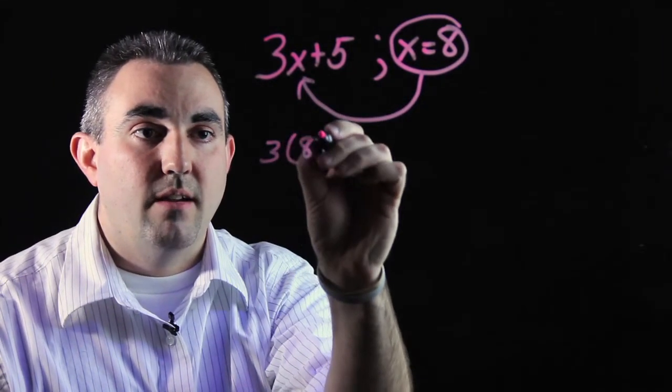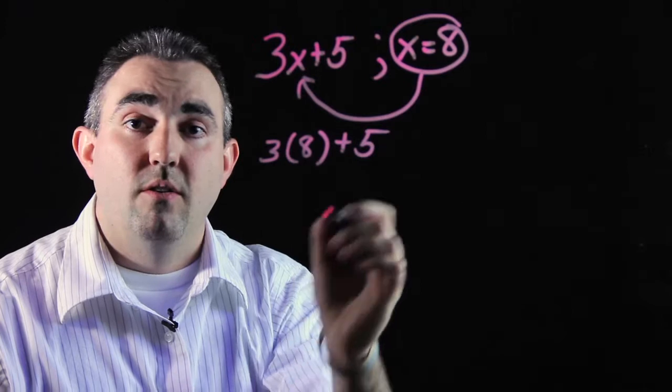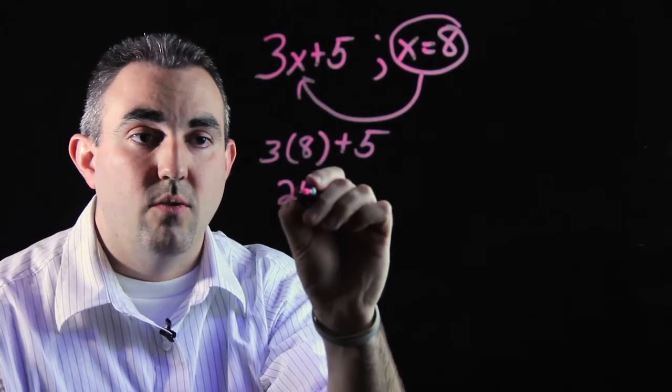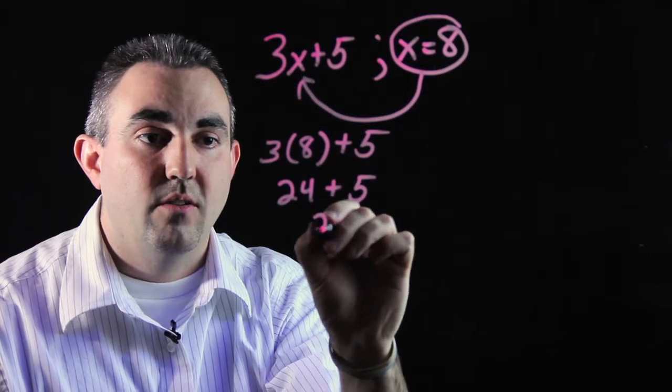Therefore, 3 times 8 plus 5 is how you would solve the rest of the problem. 8 times 3, 24, plus 5, 29.